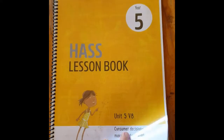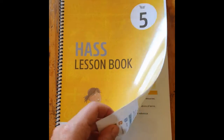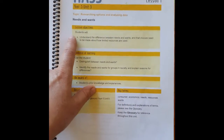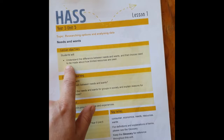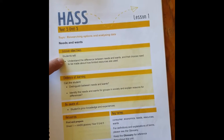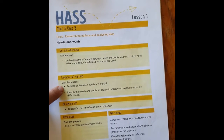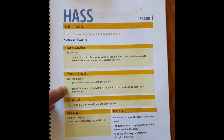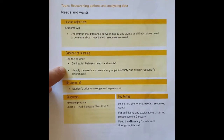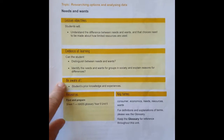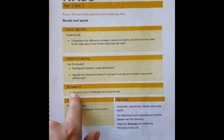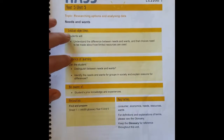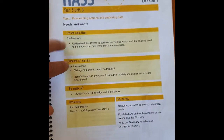The first thing to look at in each lesson is the lesson objectives. The lesson objectives tell you what the kids are learning in each lesson. And if you have a look at the evidence of learning, you're looking at what the student really needs to know by the end of this lesson. Be aware of students' prior knowledge and experiences. These two tell you what you're going to be teaching.